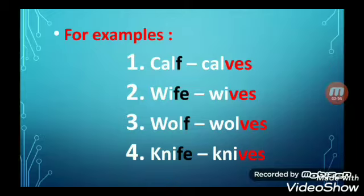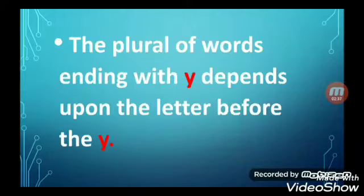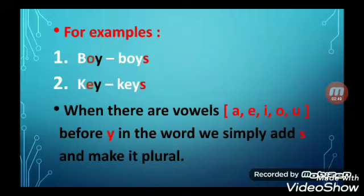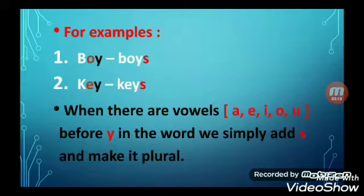Now let us learn how to form the plural of nouns ending with Y. The plural of words ending with Y depends upon the letter before the Y. For example: boy→boys, key→keys. In these words, before Y, letters O and E are there, and both O and E are vowels. So when there are vowels — A, E, I, O, U — before Y in the word, we simply add S to make it plural, as in boys and keys.